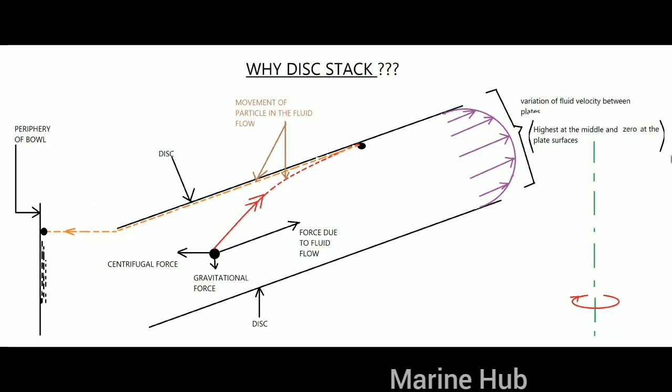Centrifugal force acts horizontally outwards. Due to the mass of the particle being very small, the gravitational force acting on it is very small. As a result of the resultant force, the particle will reach the underside of the disc where fluid velocity is zero.